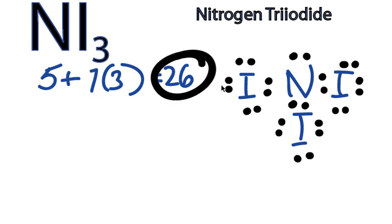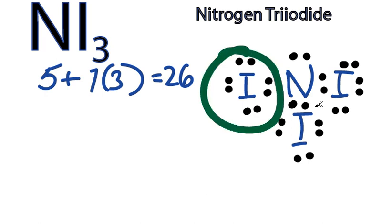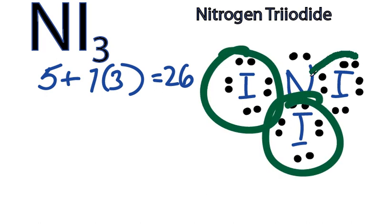We've used all the valence electrons we have. Let's see if we have octets. Each of the iodines has 8 valence electrons. So the octets are satisfied there.